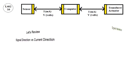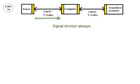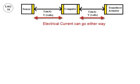Let's review signal direction versus current direction. Signal direction is always to the right. Electrical current can go either way.